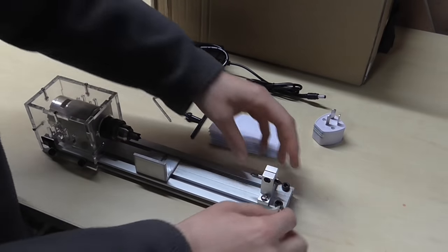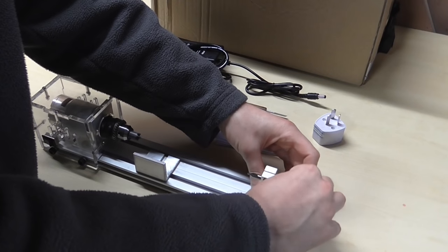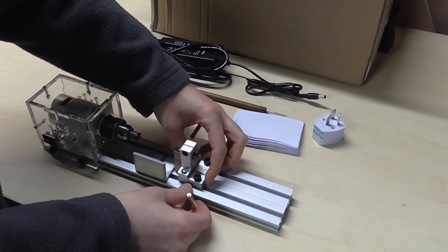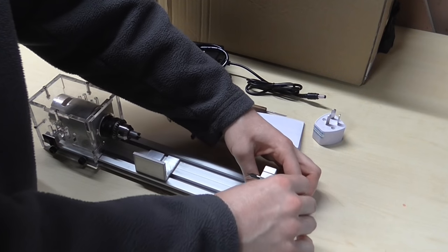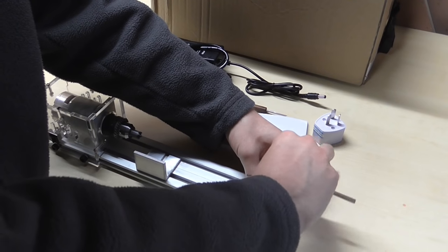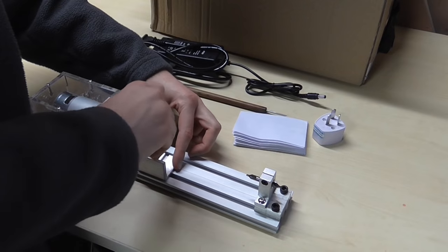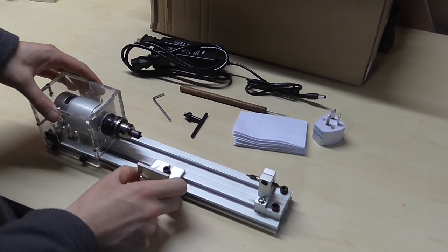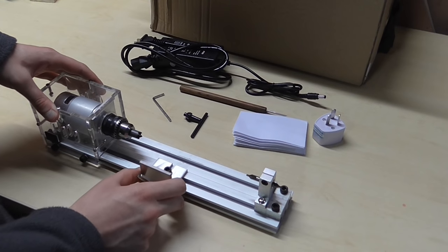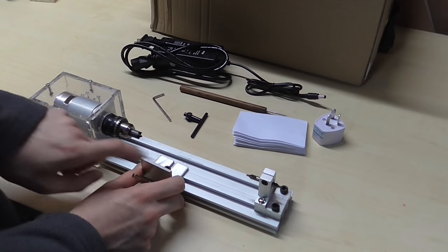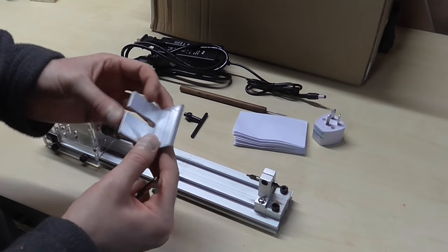Two allen keys - this one's for adjusting the tailstock which simply slides in this aluminum tray, and of course for adjusting the little tool rest that slides side to side and in and out. The height is fixed because presumably your chisel is always going to be at the same angle.